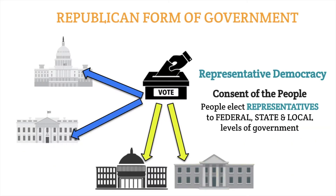The U.S. Constitution also reinforces that the United States uses a republican form of government, and that through representative democracy, people vote for their representatives at the state, local, and federal levels of government. Representative democracy becomes a key foundational part of the U.S. Constitution, giving voters the power and authority to vote for those representatives to go to their state capital or the national capital and represent them.